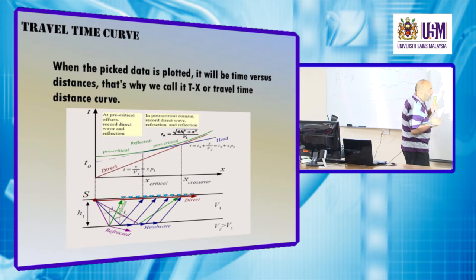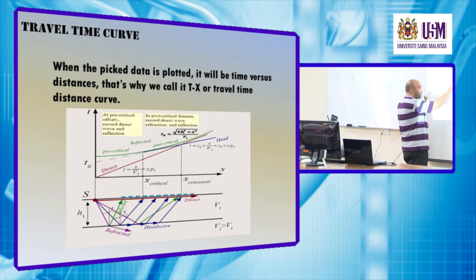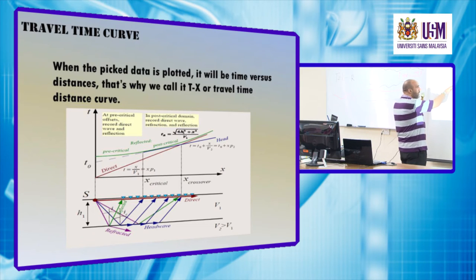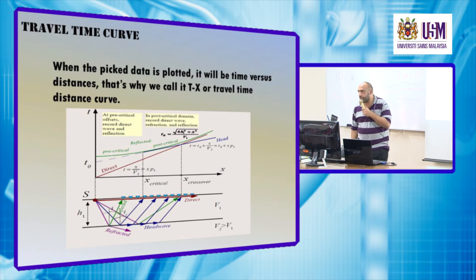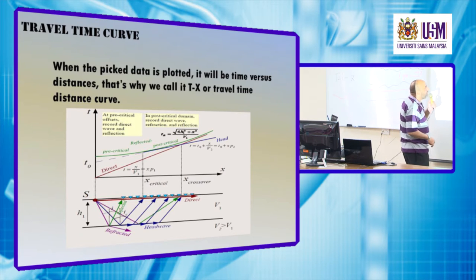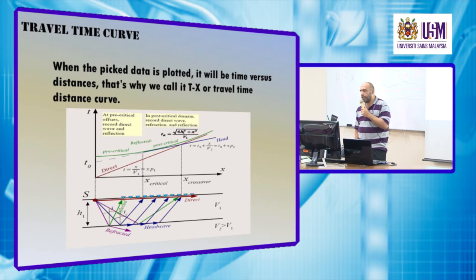At later arrivals — and this is also important for our assignment — we want to understand the various seismic energy present in our seismic section. We have the direct wave, we have the refracted wave, and we have the reflected energy. The reflected energy, as you see from the TX graph, usually comes later, so it is somehow obscured or masked with later arrivals and with arrivals from other seismic energy like ground roll, surface waves, and direct energy.